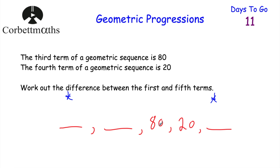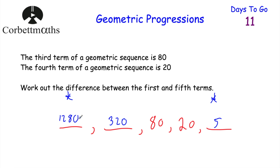Looking at 80 then 20, we're multiplying by a quarter — 80 multiplied by a quarter gives 20. So the fifth term is 20 divided by 4, which equals 5. Going backwards, since we divide by 4 going forward, we multiply by 4 going back: 80 times 4 is 320, and 320 times 4 is 1,280. So the first term is 1,280 and the fifth term is 5. The difference is 1,280 minus 5, which equals 1,275. Well done if you got that.